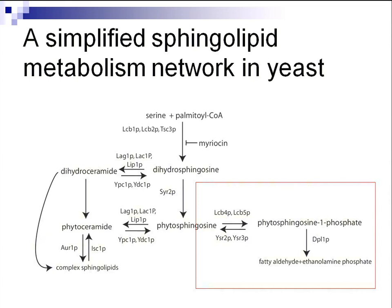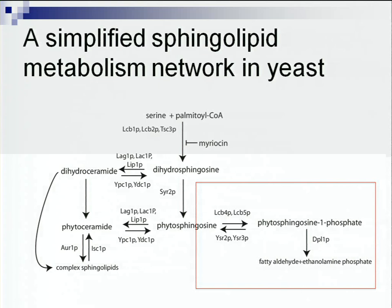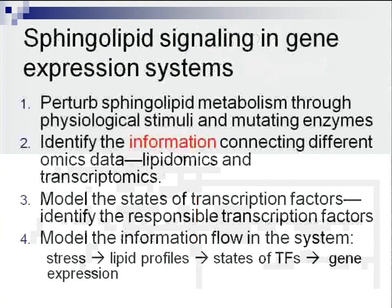The lipid species of particular interest to us is phytosphingosine-1-phosphate. We are interested in this because in mammalian cells there is a membrane receptor for this molecule, which is involved in cancer and vascular genesis. But in yeast, people say this lipid species has no function. So we are interested in this, and we began to try - if we knock out the kinase gene that produces the phosphate and clamp this lipid, we can monitor the impact on gene expression.